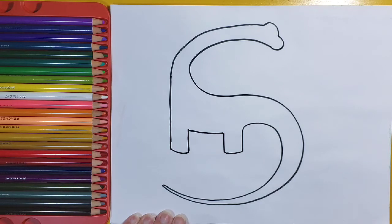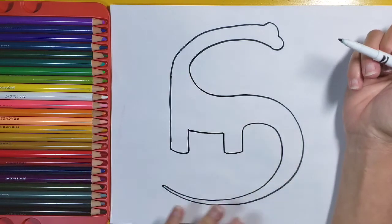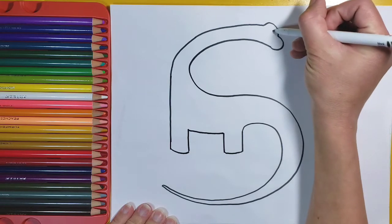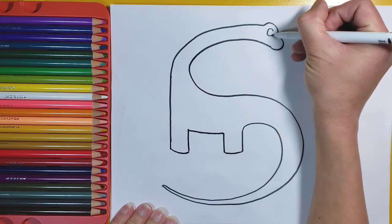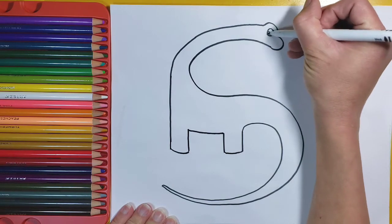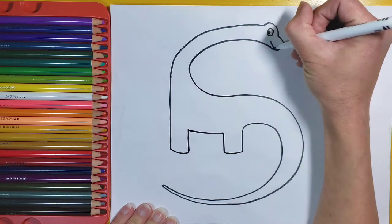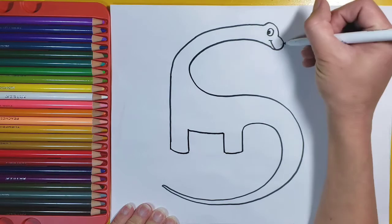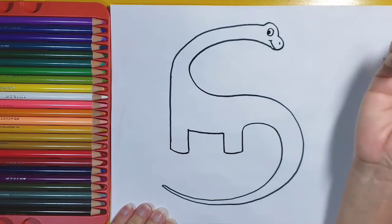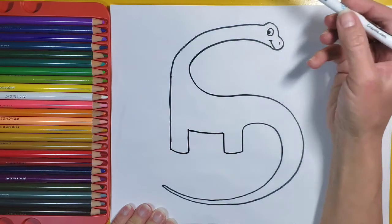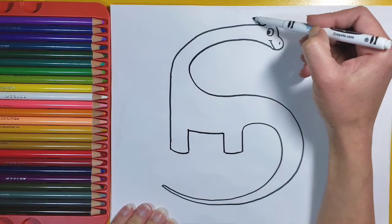So I add an eye up here, and you can kind of make it looking whichever way you want. I make a smile right here, maybe a little nose. And then, depending on the kind of dinosaur—I'm sure there's lots of different ones—but I'm going to go ahead and add some little spikes.